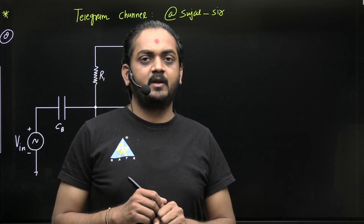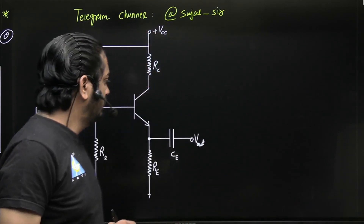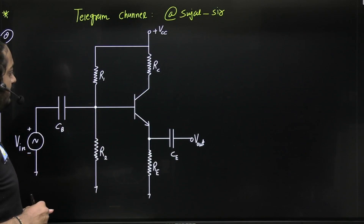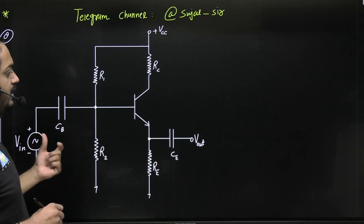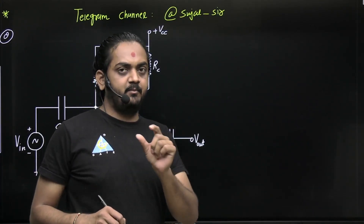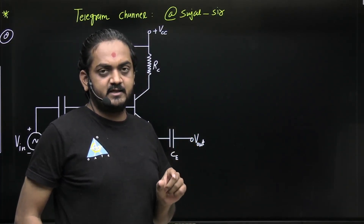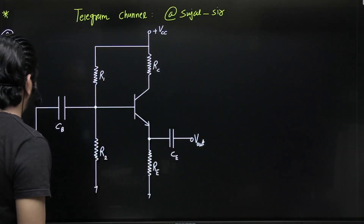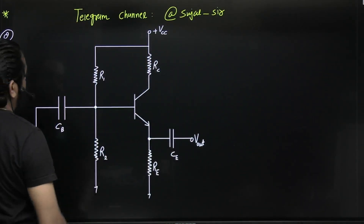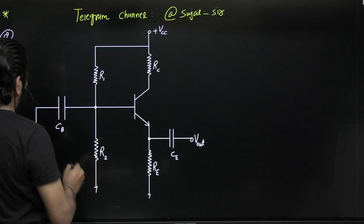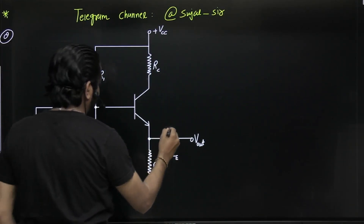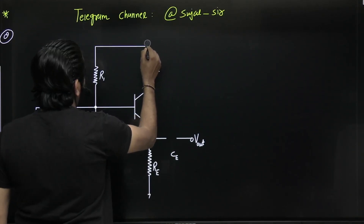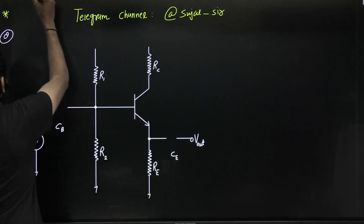Hello dear students. Now, how to find voltage gain of this BJT amplifier configuration. I have already covered part 1 and part 2 before - you can watch the previous parts. Now, for AC analysis, both capacitors are short-circuited and DC voltage sources are connected to ground, giving us the AC equivalent circuit.